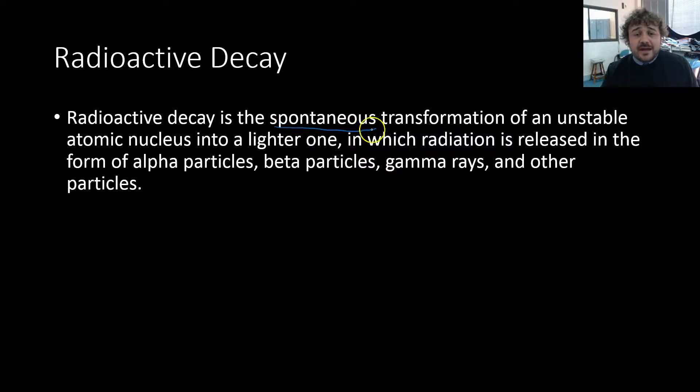So first off we need to really write down what that is. Radioactive decay is the spontaneous transformation, in other words it's going to happen on its own, of an unstable atomic nucleus into a lighter one. Now what this means is that the radiation is released in the form of an alpha particle or beta particles, and these make it lighter.